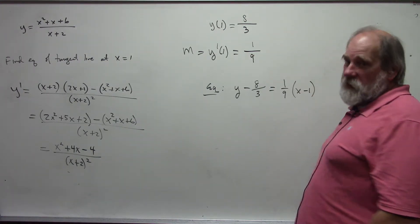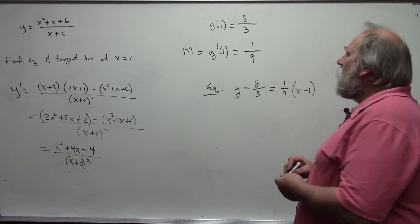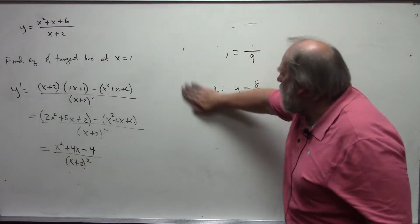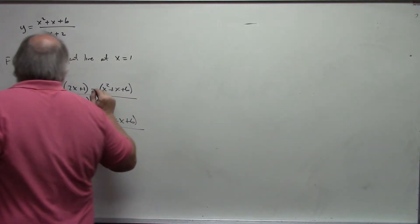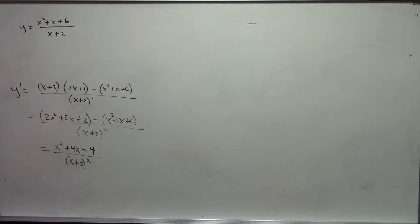And so my equation becomes y minus 8 thirds is equal to 1 ninth times the quantity x minus 1. Okay, that's the equation of the tangent line. Now, I want to use this same function and same derivative to do something different. So I'll erase that part, but I'll leave the derivative part here.